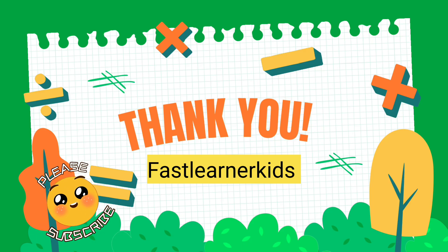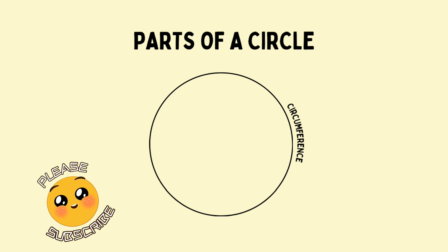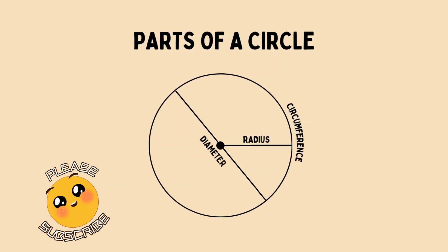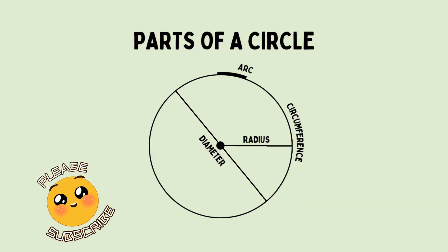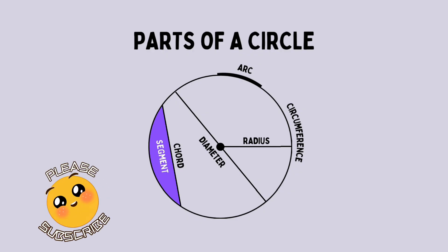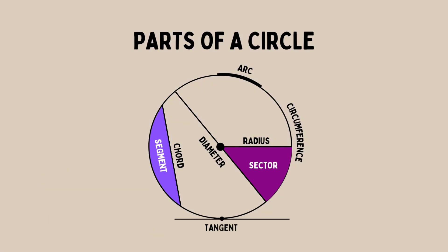Let's keep moving! Remember to share, like, and subscribe on Fast Learner Kids. Now, parts of a circle — circumference of a circle. We have: radius, diameter, arc, chord, segment, sector. These are all parts of a circle.